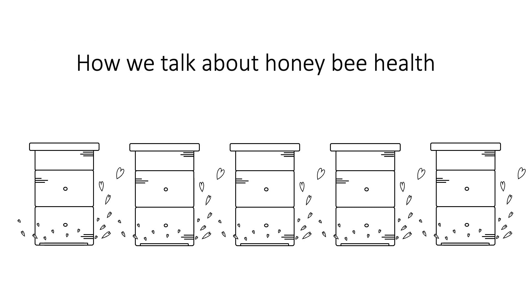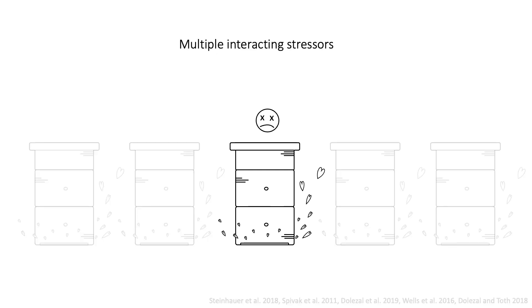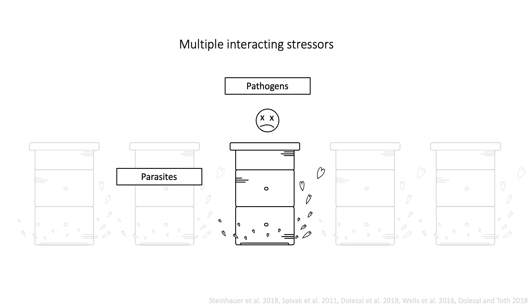In the US, when honeybee researchers talk about honeybee health, we often start by describing the following problem: honeybee health is precarious and colony losses occur at unsustainable rates. We then refer to a set of multiple interacting stressors to explain the causes of colony loss, commonly known as the four Ps. These include parasites, pathogens, poor nutrition, and pesticides.